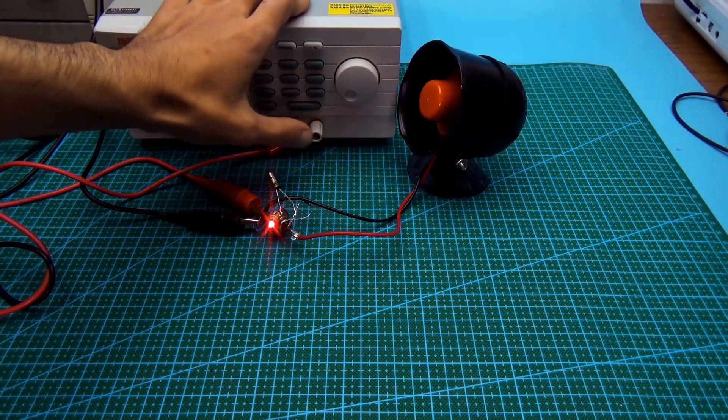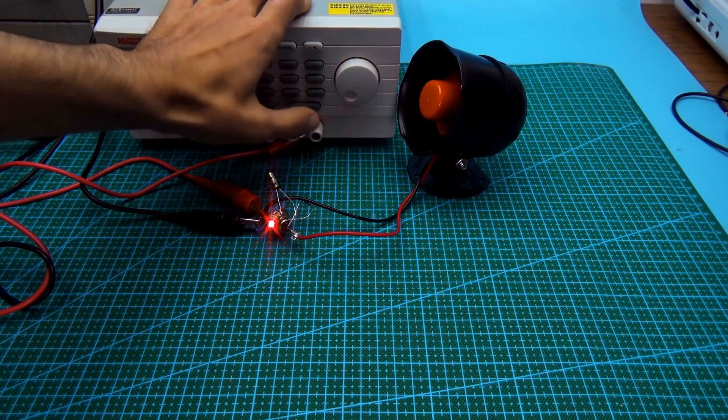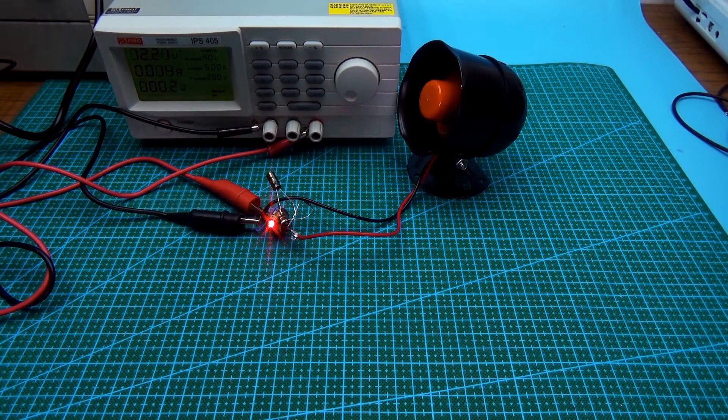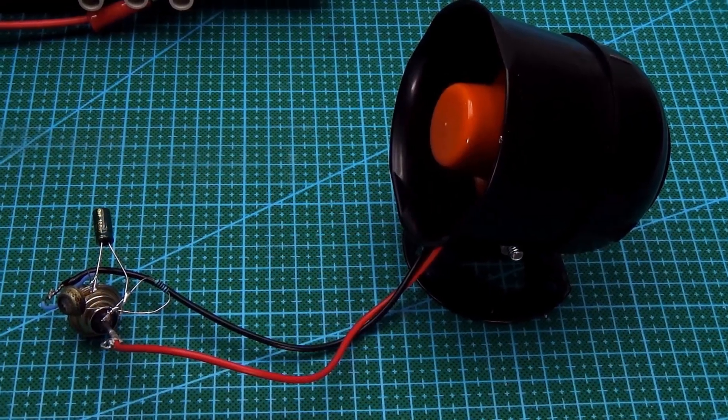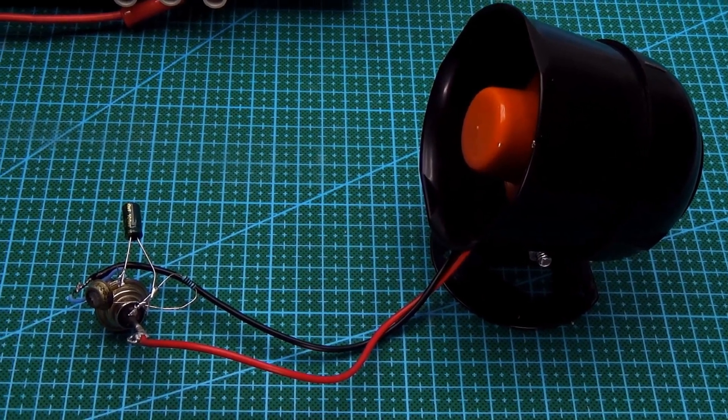To reset the alarm, you need to first turn off the power, turn on the laser, aim it at the photoresistor and then supply power to the circuit. The alarm is ready to operate a few seconds after being turned on.